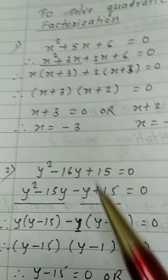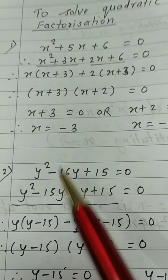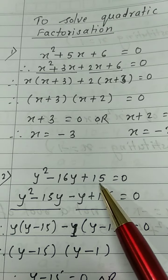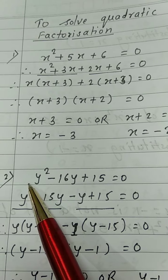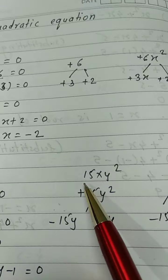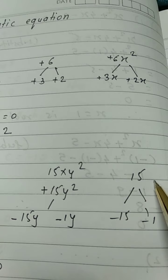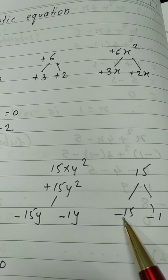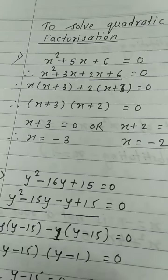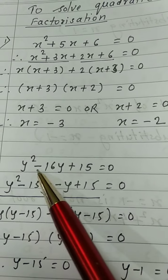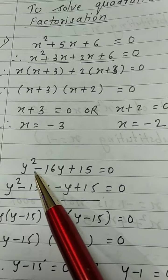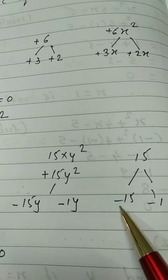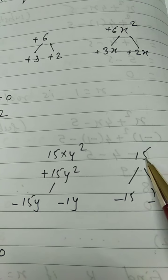Next, example number 2: y² − 16y + 15 = 0. Here we take the product of 15 and 1, so the product is 15. The factors are −15 and −1, because our product should be +15 and the middle term should be −16. So both terms will be −1 and −15, since (−15) × (−1) = +15.